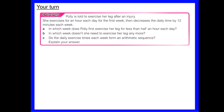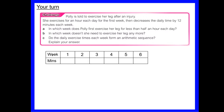Setting up a table with weeks across the top and minutes of exercise along the bottom. Week 1 is 60 minutes (one hour). Each week she decreases by 12 minutes: week 2 is 48, week 3 is 36, week 4 is 24, week 5 is 12, week 6 is 0.